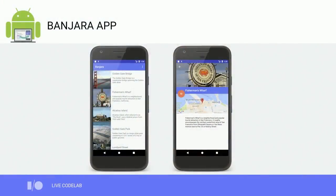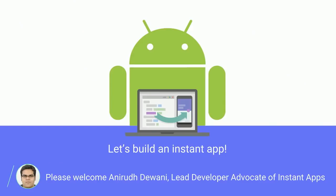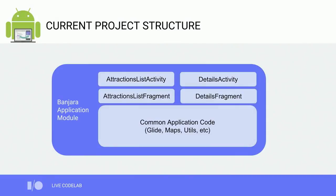Anirudh has an app called Banjara — a Hindi word for nomad. The Banjara app is a tourist attractions app. It gives you a list of attractions around you, and for any given attraction, it gives you details. The Banjara app has a top-level application module with two activities — one for the attractions list and one for the details. Each of these activities has their own fragments. There's some common code such as integration with Glide, maps, and some utilities. The app also uses the runtime permissions API for location.